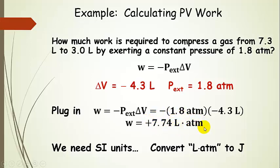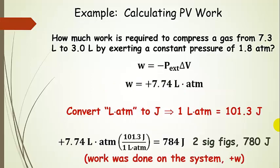Plugging that in, the volume decreased by 4.3 liters. With the external pressure of 1.8 atmospheres, we end up with 7.74. Now look at those units — liter atmospheres — those aren't SI units, so we have to convert them to joules. The conversion is 1 liter atmosphere equals 101.3 joules. Taking our 7.74 liter atmospheres and multiplying by 101.3 joules per liter atmosphere, the liter atmospheres cancel and we get 784 joules. With two significant figures throughout, we round down to 780 joules. The sign of the work is positive — positive 780 joules — and that was work done on the system.